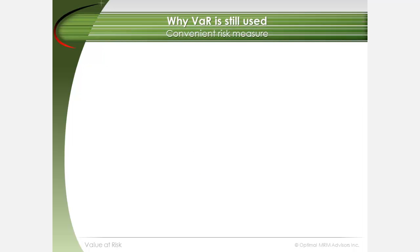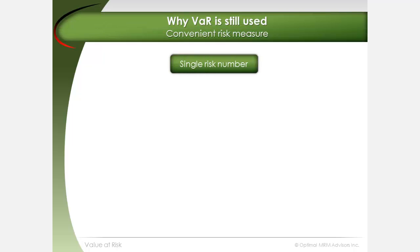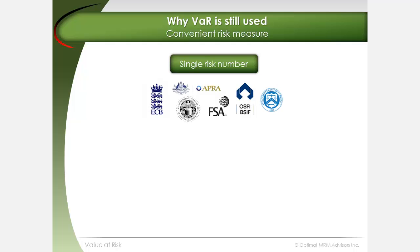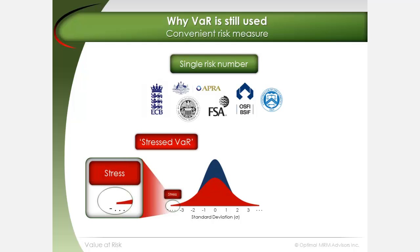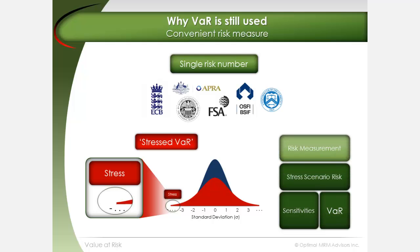The attraction of VAR is that it represents potential portfolio loss as a single number. Regulators are beginning to rethink VAR as a basis for setting regulatory capital requirements. The setting of capital based on a stressed VAR measure under Basel is an example of coming changes that will influence the setting of regulatory capital. VAR will likely remain a core component of an integrated set of risk measures, including risk sensitivities and stress scenario risk.